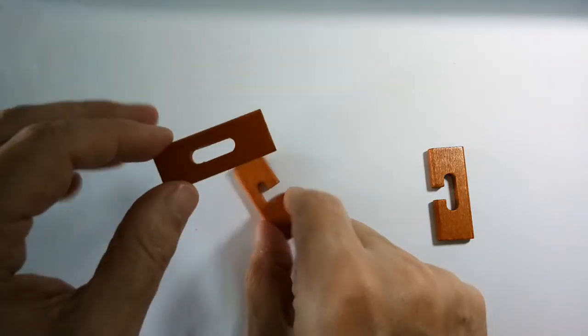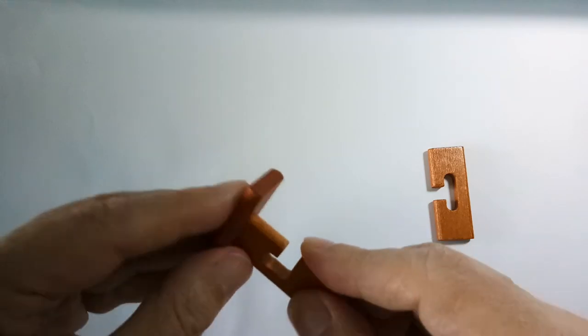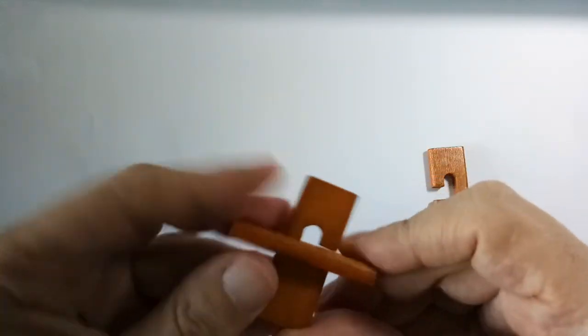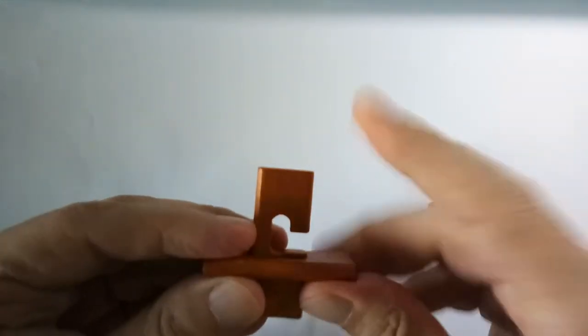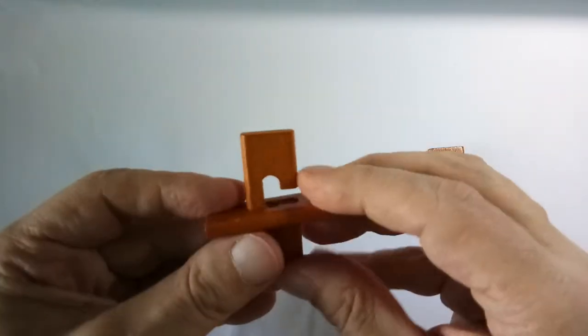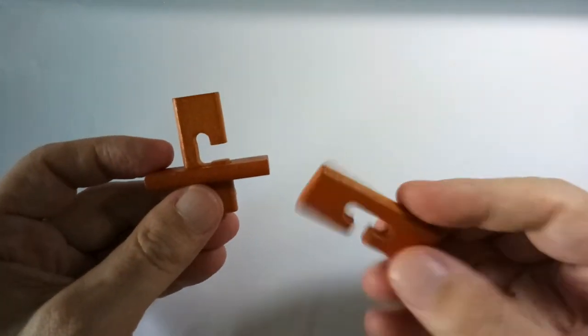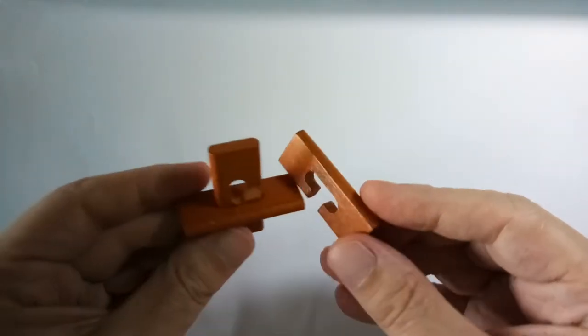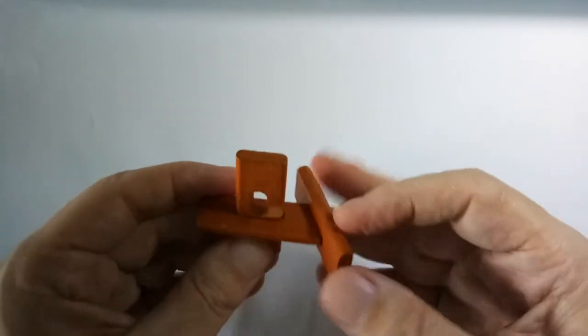You take the piece with the opening and you put this through there like so. Okay, then you take the other piece, the last piece, and you slide it over like this.